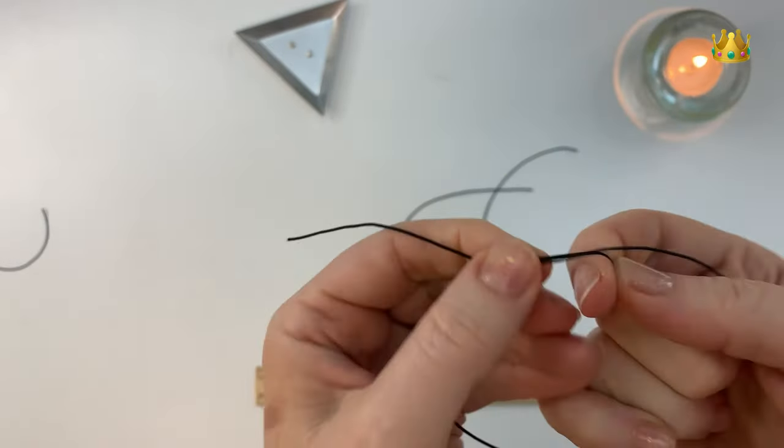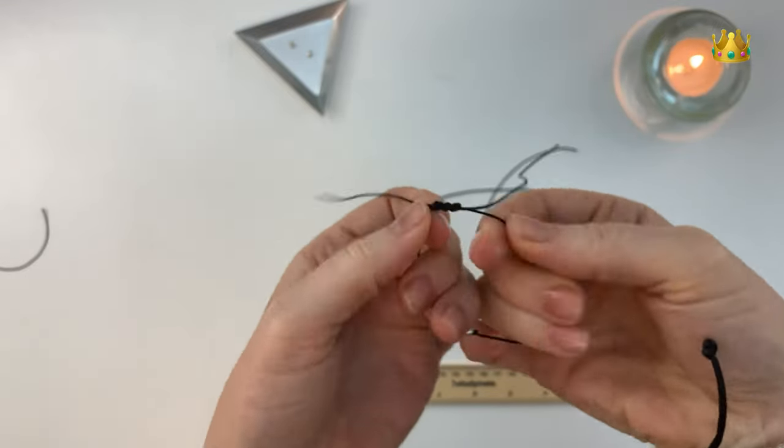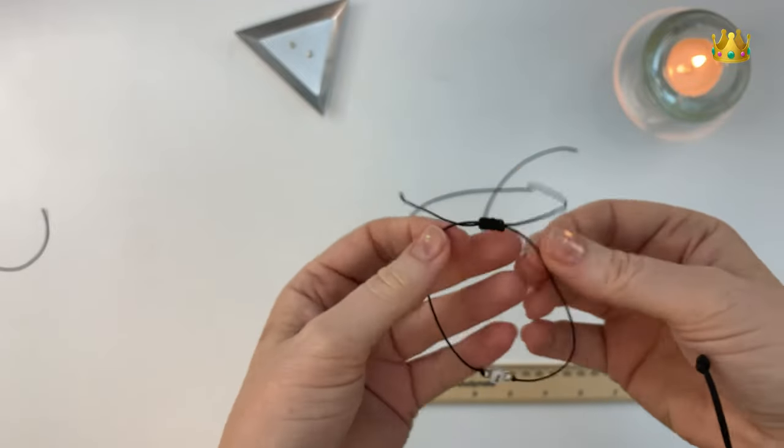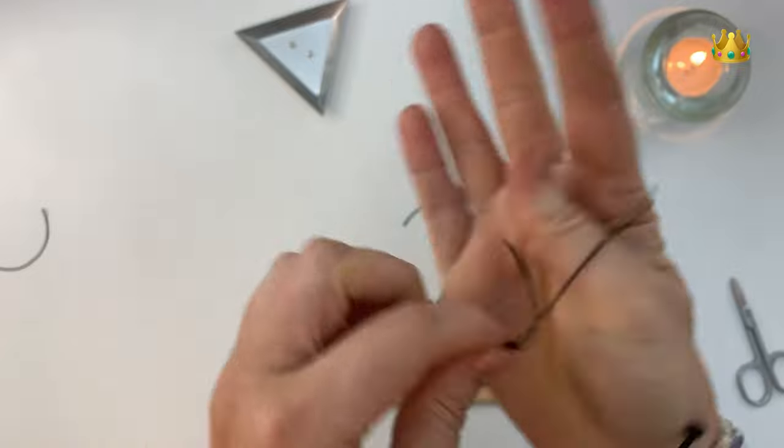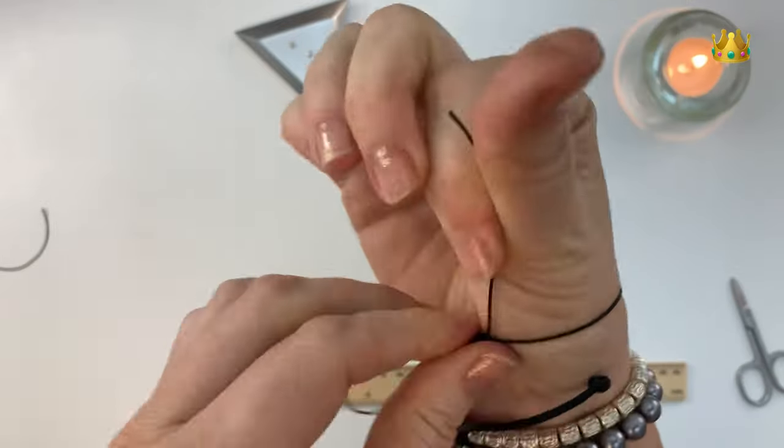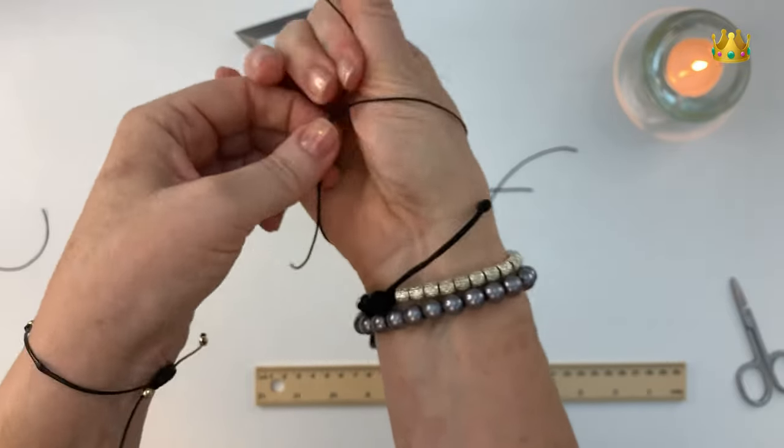Now I just make sure my sliding knot is sliding okay. And now we're going to size our bracelet. So we need to extend it to the point where it can fit over our hand. This is the minimum size it can be and still fit over your hand to go on and off.